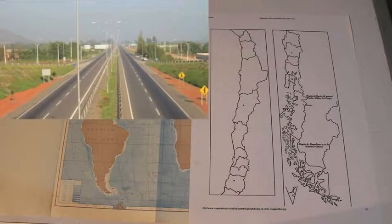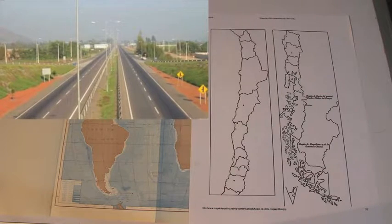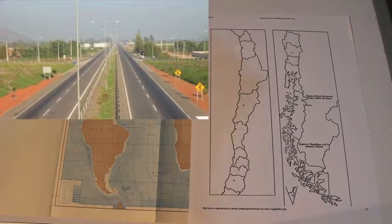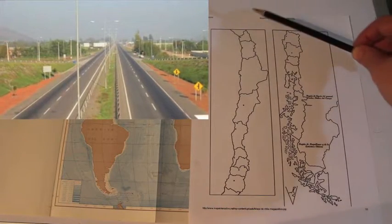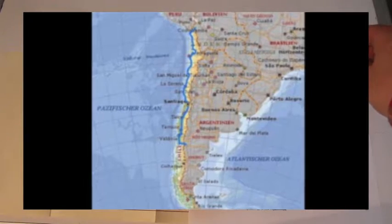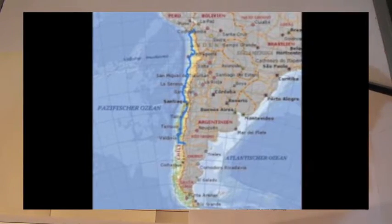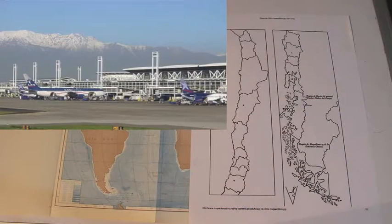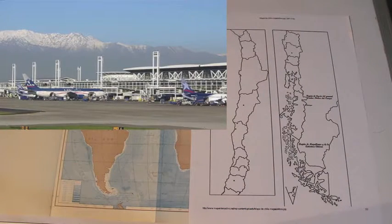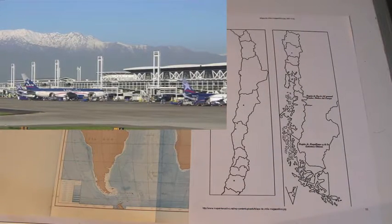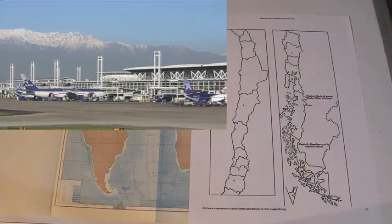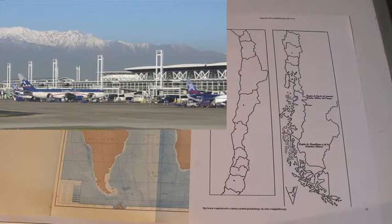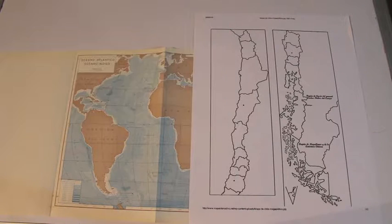The country is internally united by the Pan-American Highway from Arica to Puerto Montt, and by connecting flights between Santiago International Airport and the extreme regions of Chile.